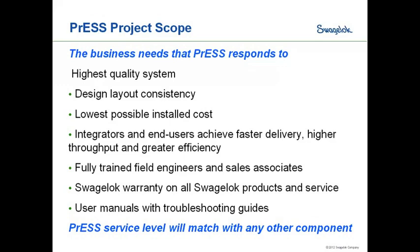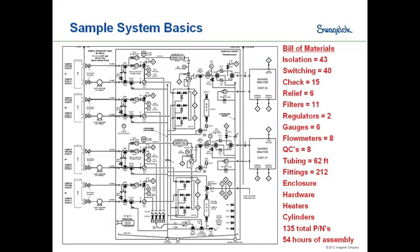The PRESS service level is designed to feel like any other component offered by Swagelok. In the past, and still many times today, these systems are engineered using discrete components following a P&ID layout, where each discrete component is placed and connected to the next. This can be very time consuming and difficult to do correctly. A typical example — a four-process-stream system with two analyzers — can easily have 43 isolation valves, 40 switching valves, and 135 separate individual part numbers.